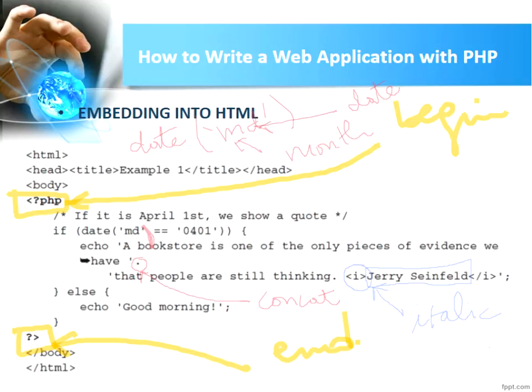So when we execute this code: if the date is April 1st, we will obtain the special message displayed in italic. If the date is not April 1st, we will obtain 'Good morning'.